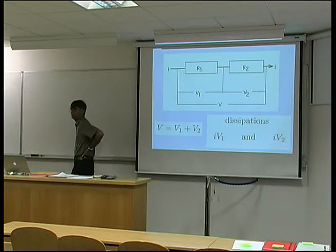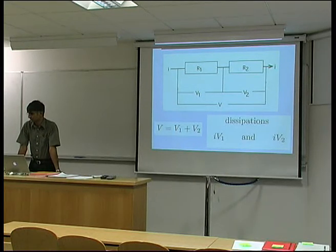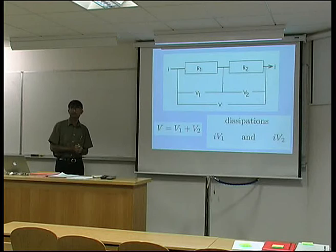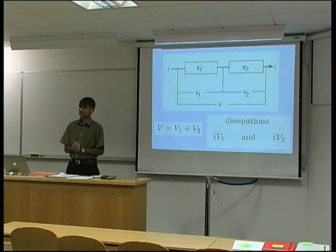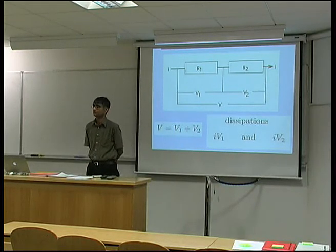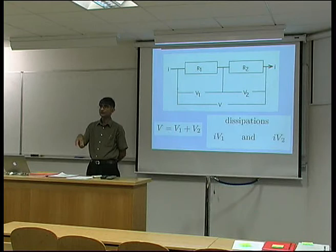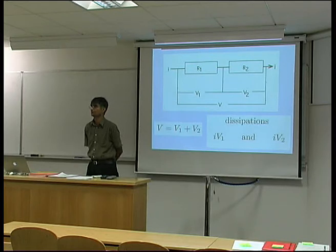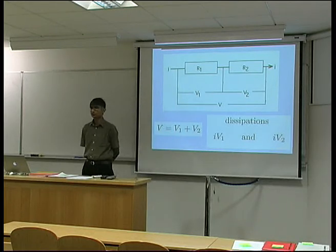I'm going to deal with the formation of a precipitate from a supersaturated matrix. The precipitate may have a different chemical composition, and it may have a different crystal structure, or even if it has the same crystal structure it might have a different crystallographic orientation. So what do you think are the processes which will control its growth rate? We've got a particle which is attempting to grow in a matrix — it has a different chemical composition, a different orientation or crystal structure, or both.